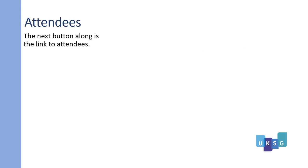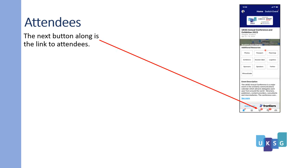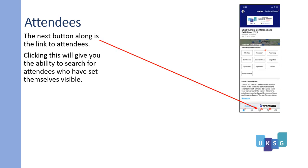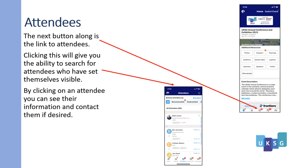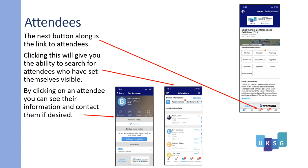Attendees. The next button along on the home page is the link to attendees. Clicking this will give you the ability to search for attendees who have set themselves visible. By clicking on an attendee, you can see their information and contact them if desired.